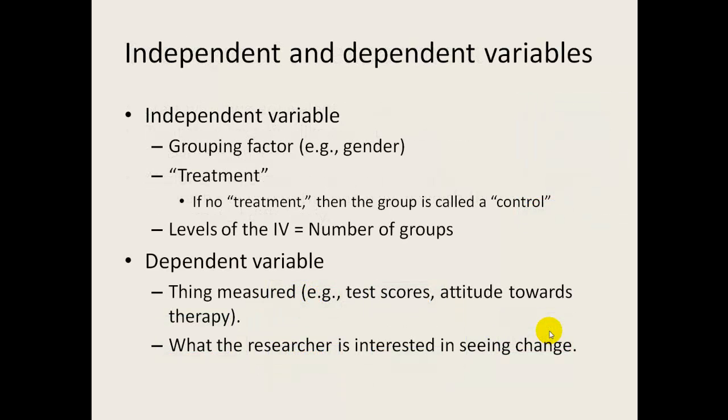Now I've mentioned the term independent, rather dependent variable, already as the thing that we measure. But the independent variable, one of the things I want you to realize is that the independent variable is usually the thing that you group stuff on, and it can also be the thing that you treat them differently on. The number of levels of the independent variables will always end up being the number of groups that you actually have in your design.